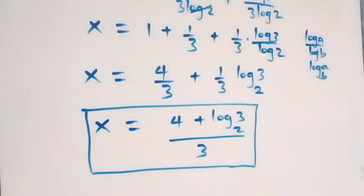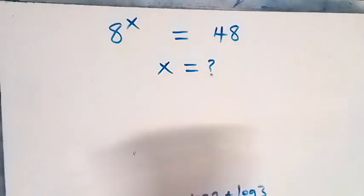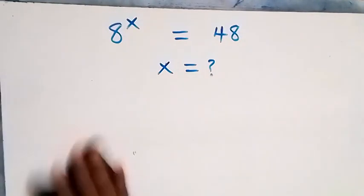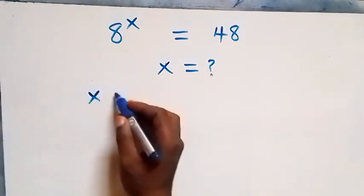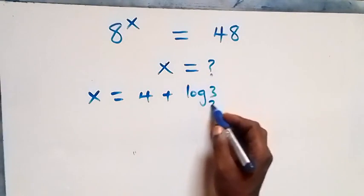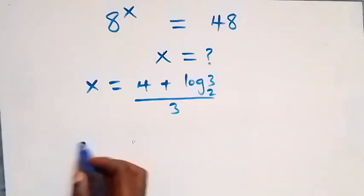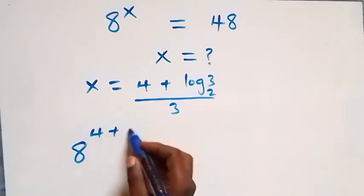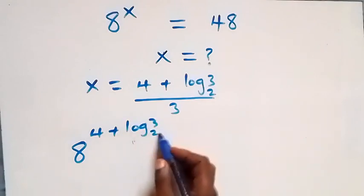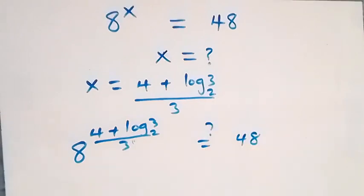Writing this with a common denominator, the solution is x equals (4 plus log 3 base 2) over 3. We now check to confirm this satisfies the original equation. We substitute x equals (4 plus log 3 base 2) over 3 back into the equation, giving 8 raised to power (4 plus log 3 base 2) over 3 equals 48.